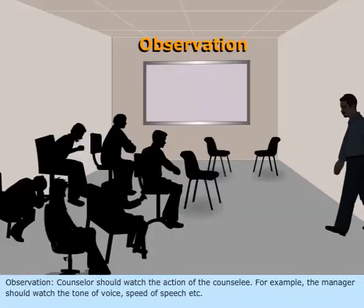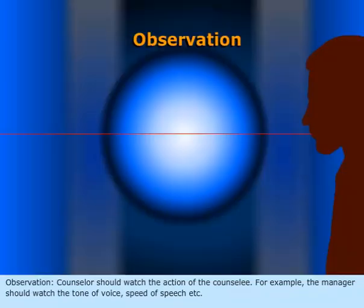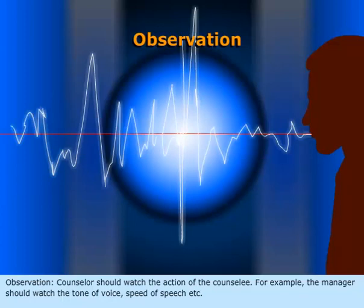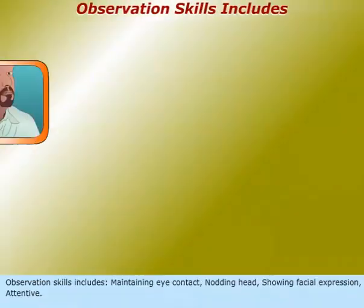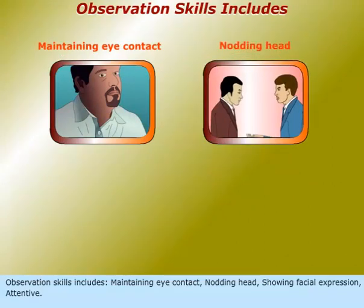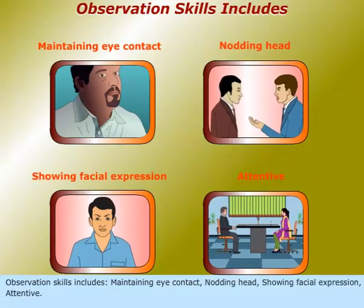Observation: The counsellor should watch the action of the counselee. For example, the manager should watch the tone of voice, speed of speech, etc. Observation skills include maintaining eye contact, nodding head, showing facial expression, and being attentive.